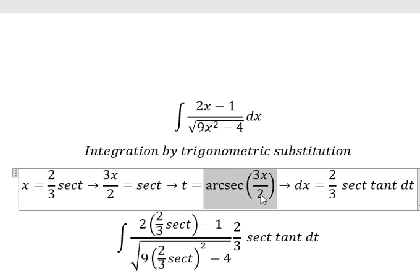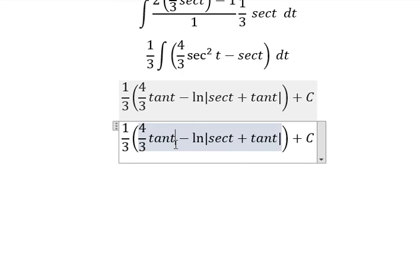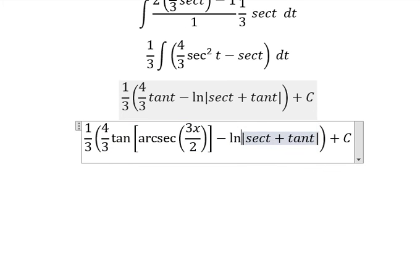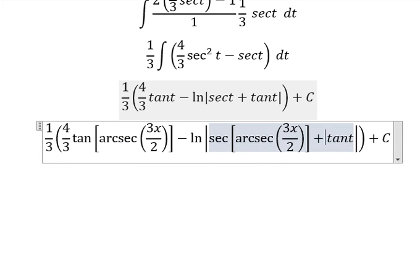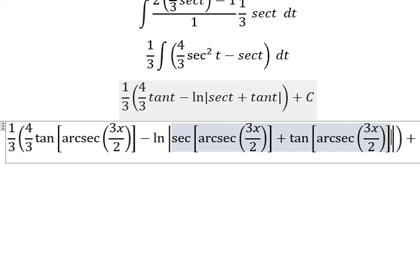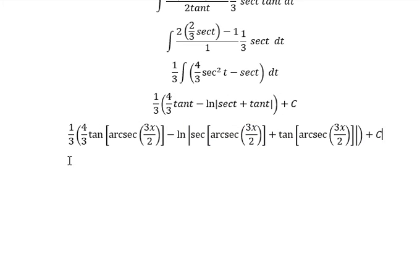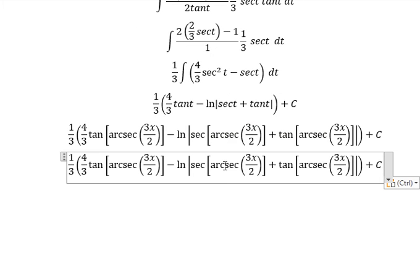And now I will put this one to change for t. So secant with arcsecant, we have 3x over 2.